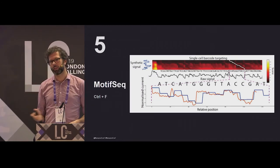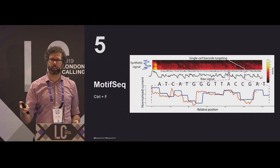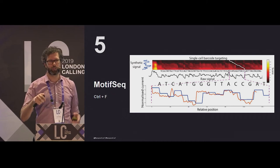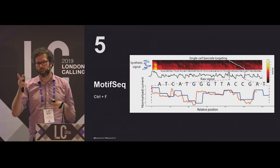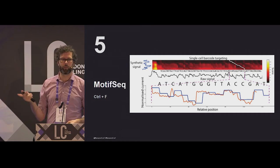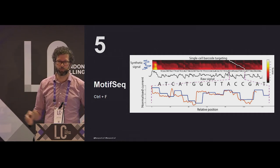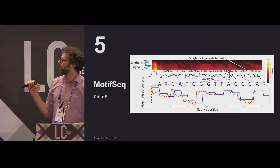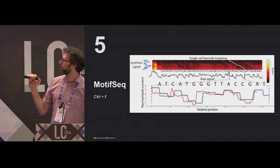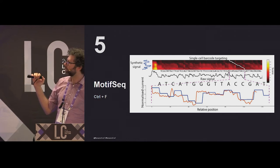So MotifSeq. This is the, if you've ever gone to a website, and you want to find something, so you go Control-F, you type what you want, and then it comes up. This is kind of like that, but for signal space, or for BLAST, if you're used to that. So in this case, we take the letter sequence that we're interested in, a motif. We convert that into a synthetic signal here. So this is the blue line.